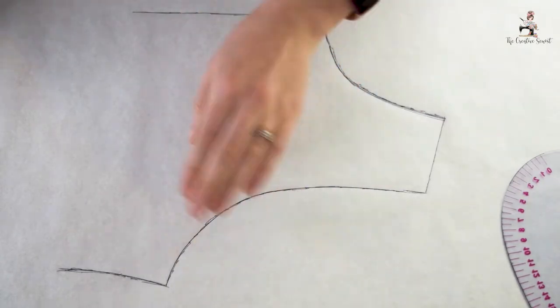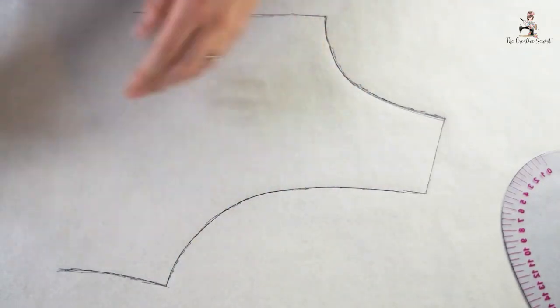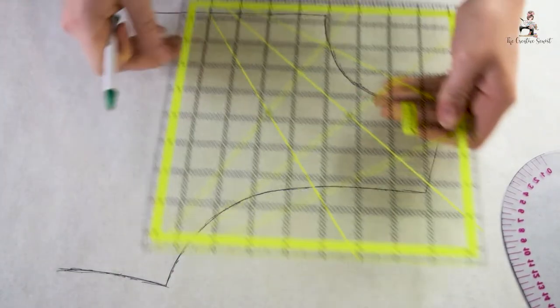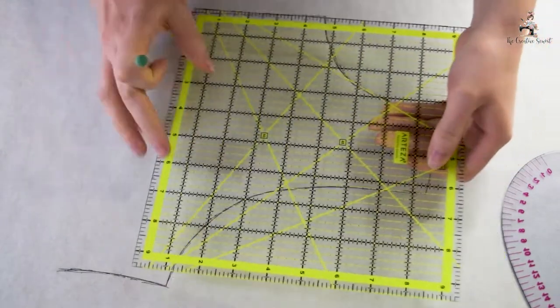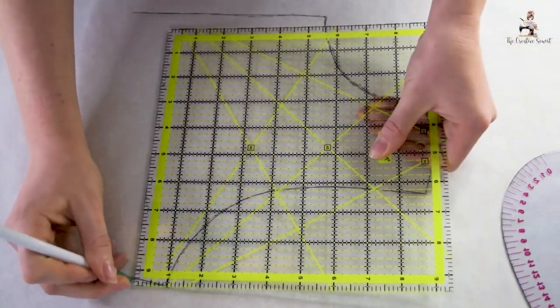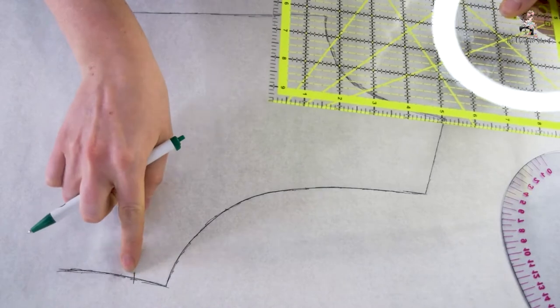Let's say, for example, that I want to lower my armhole by one inch. I can simply go in with my straight edge ruler and mark down the side seam one inch.